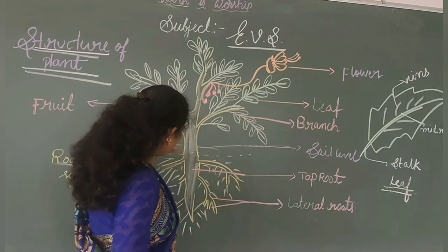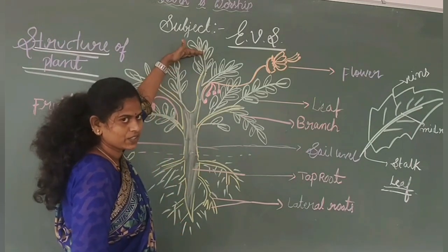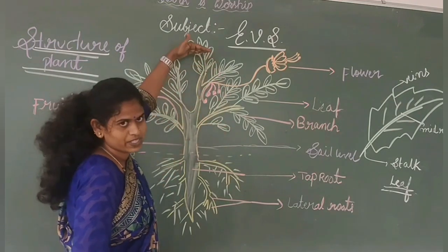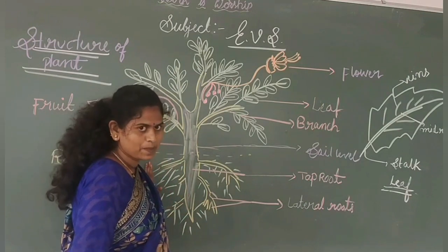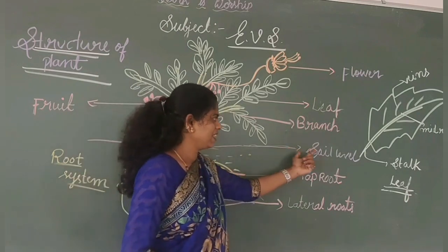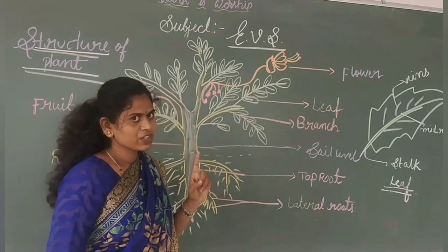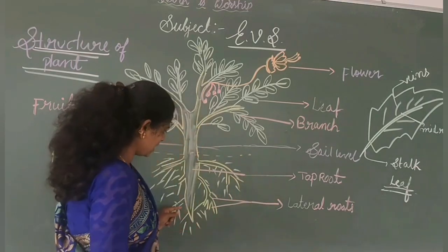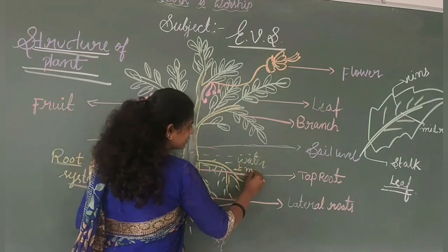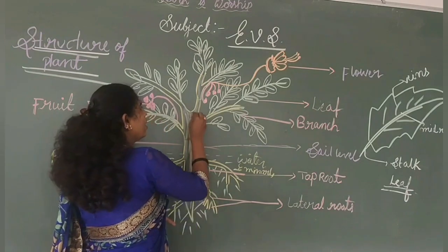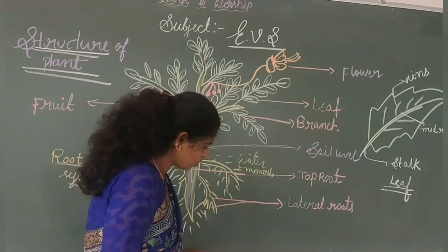The root system is present below the soil. What are the main functions of the roots? Roots are involved in absorbing water and minerals present in the soil and supplying them to all the parts of the plant. The main function of the root is to help in absorbing water and minerals present in the soil.